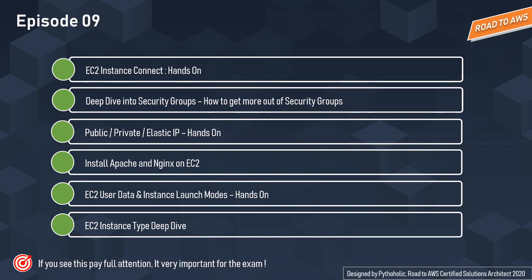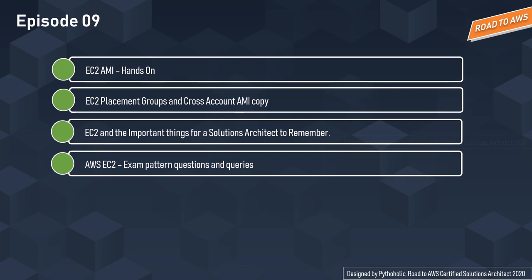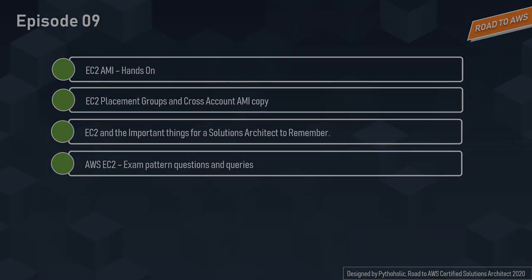We'll start off with EC2 Instance Connect — one more way you can connect to the EC2 instance from the browser itself. Then we'll have a deep dive into security groups. We'll discuss public IP, private IP, and the elastic IP. We'll install Apache and Nginx on EC2, then move forward with user data and instance launch modes. Then we'll have a hands-on on the EC2 AMI.